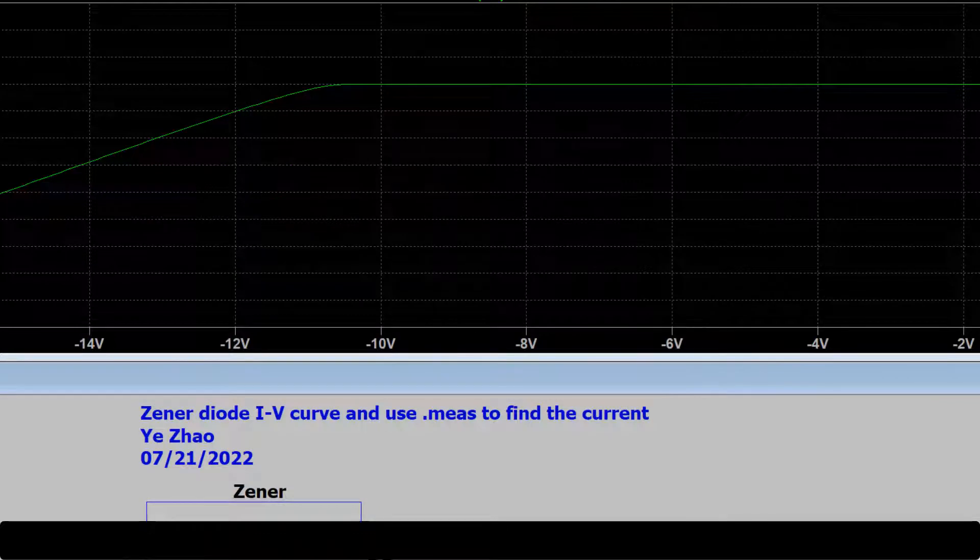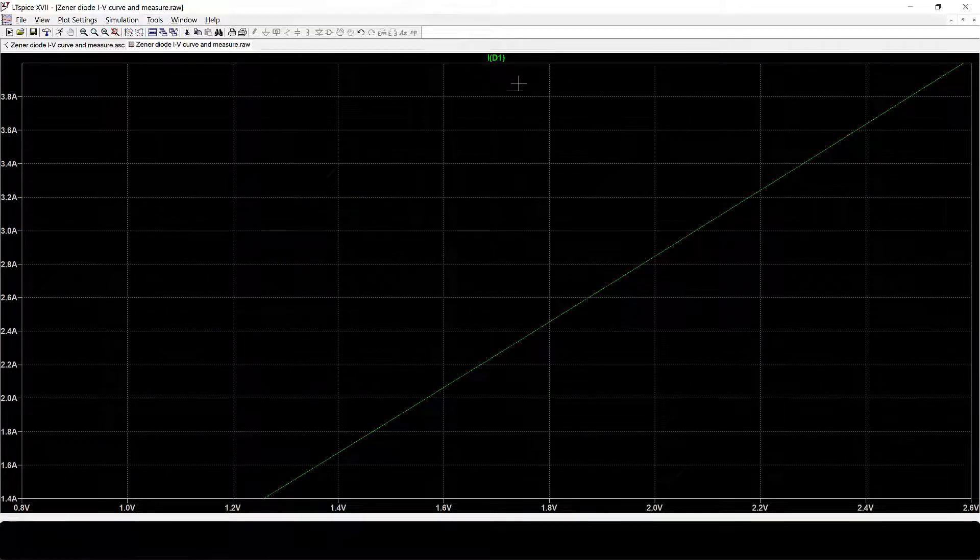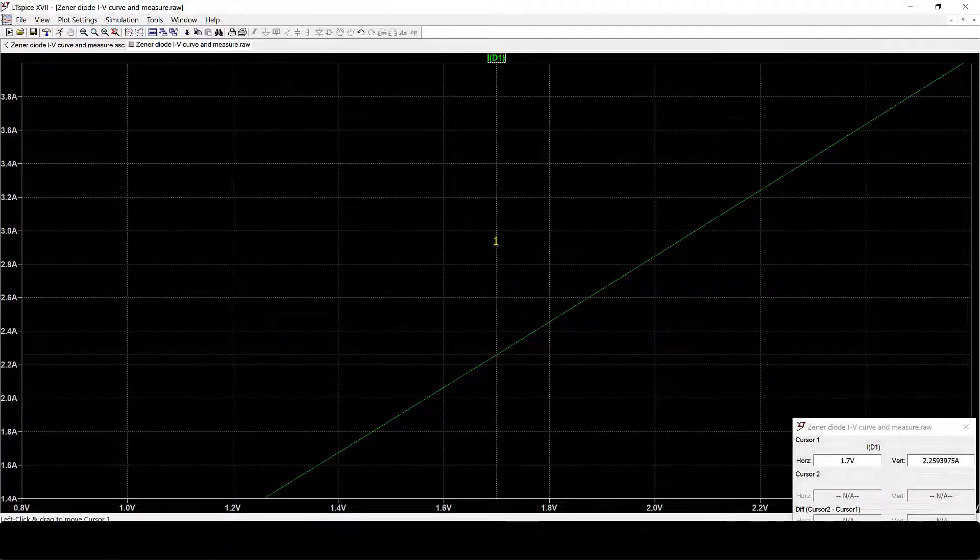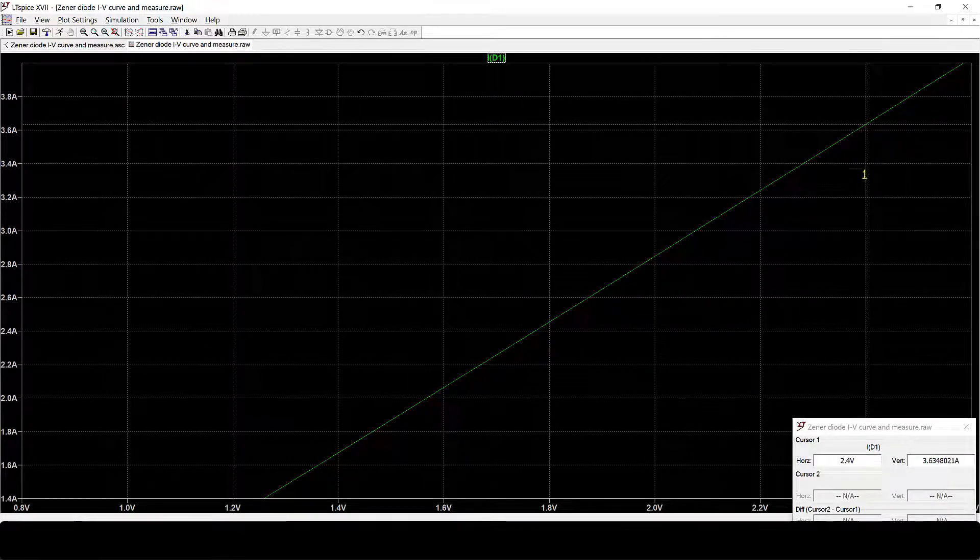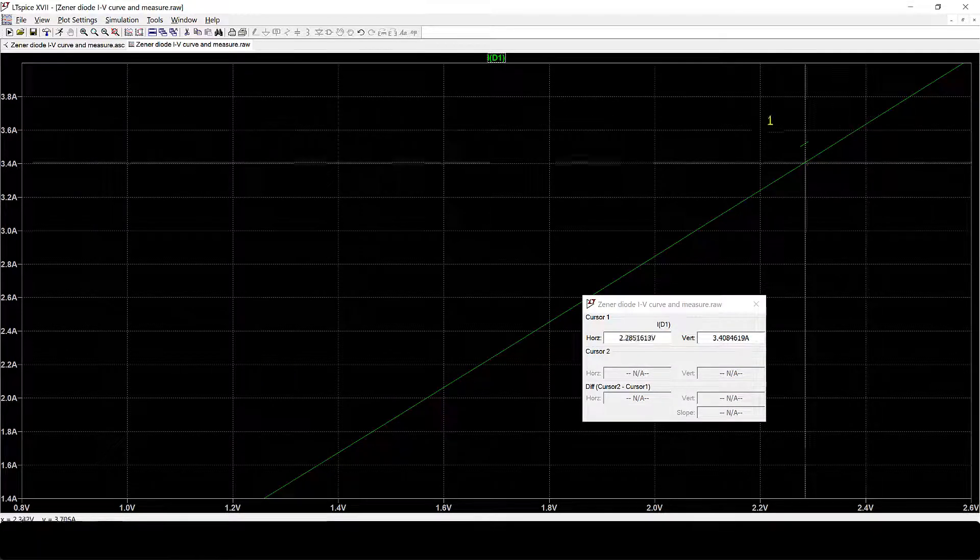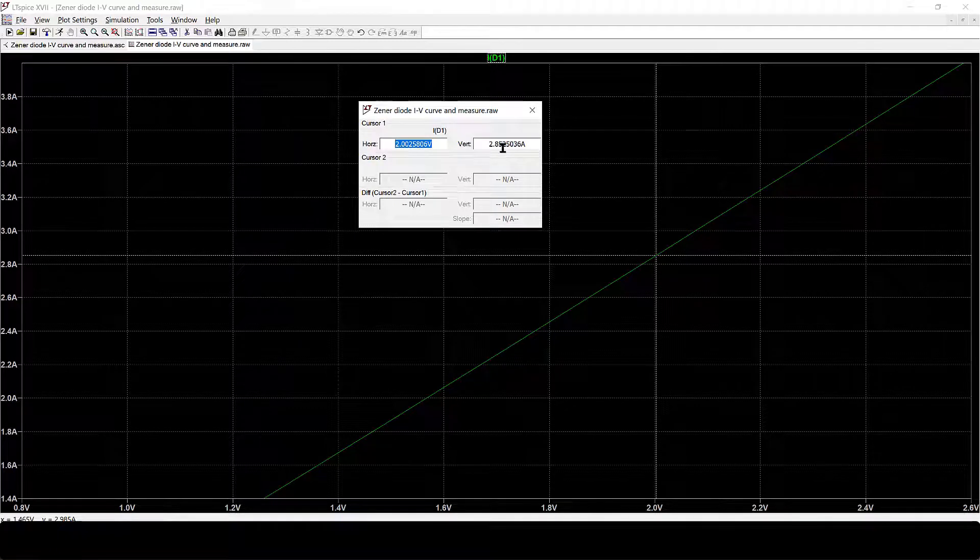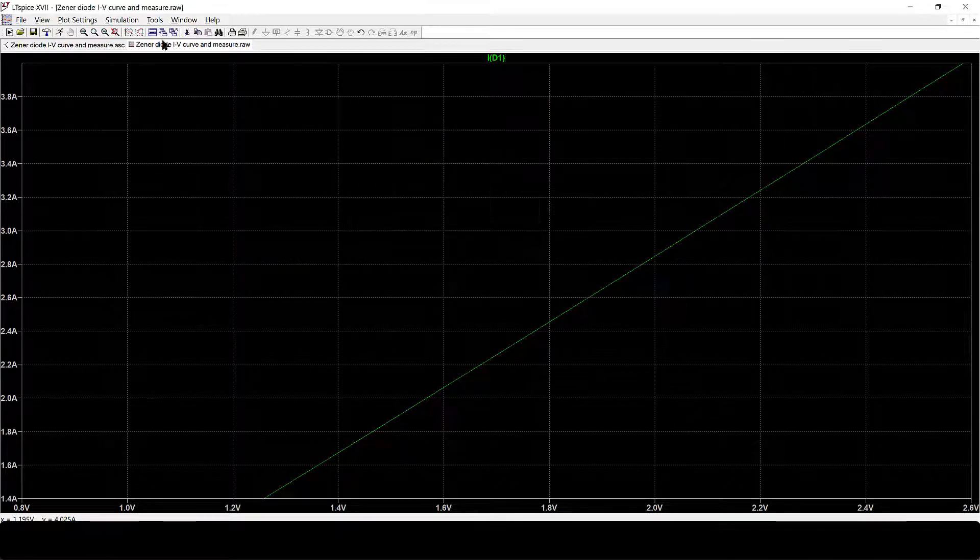Let's go back to the plot. Look at the cursor. At 2V, you can see when the voltage is about 2V, the current is found as 2.85A, which is what we have found before using the measure.